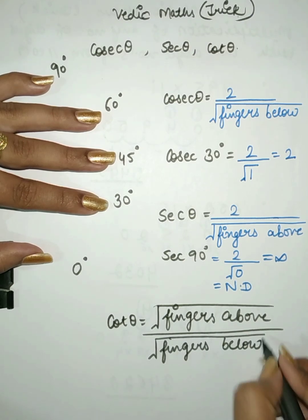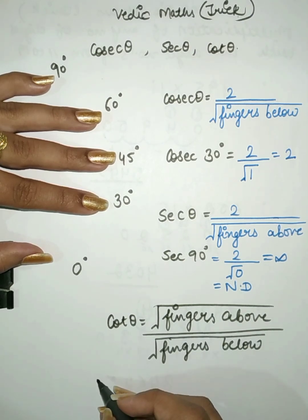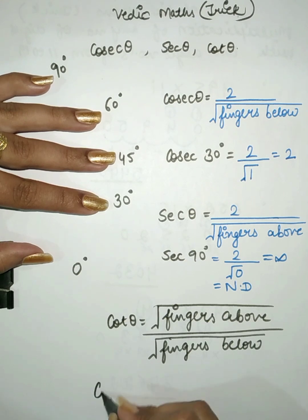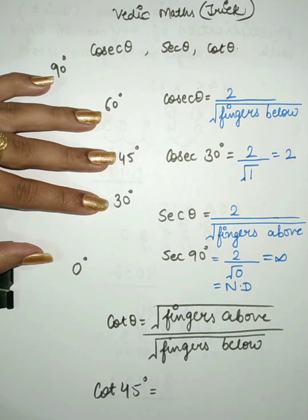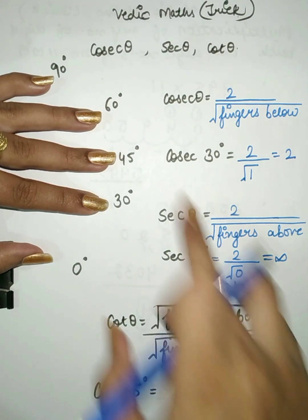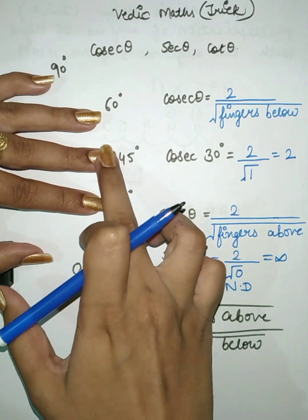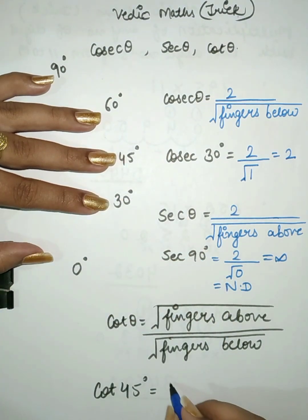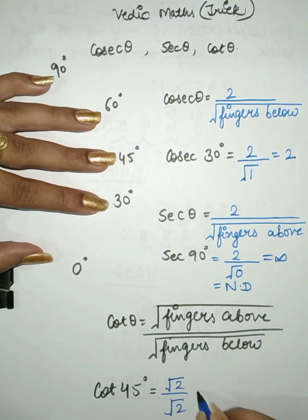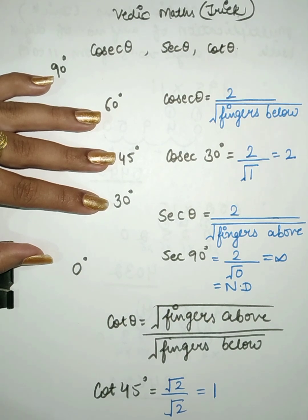Now we have to find the value of cot 45 degree. The fingers above 45 is 2 fingers and below 45 is also 2 fingers. So we get root of 2 divided by root of 2, which equals 1. So cot 45 degree will be equal to 1.